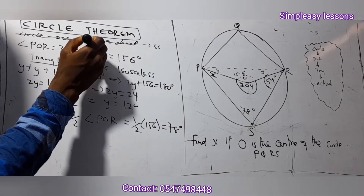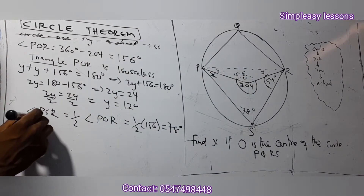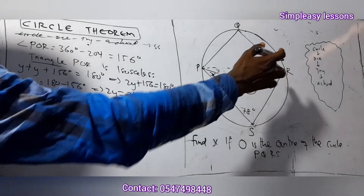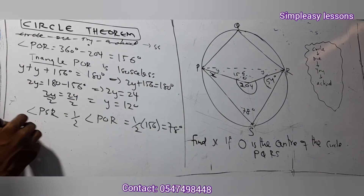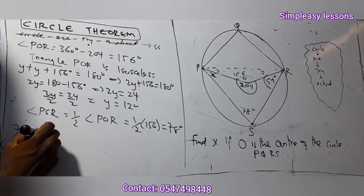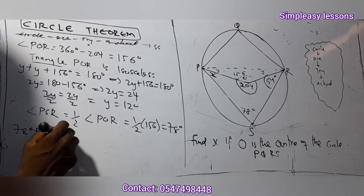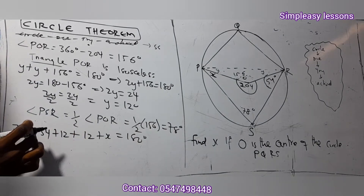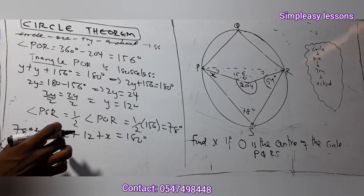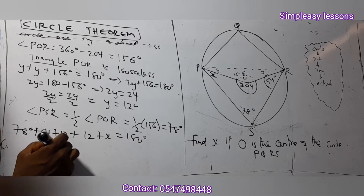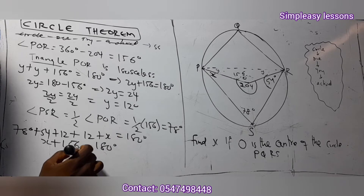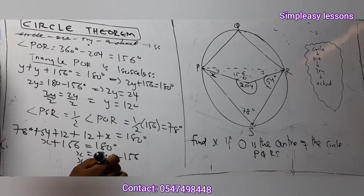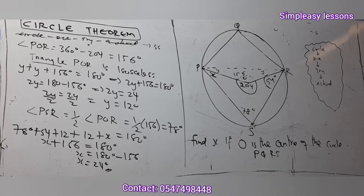Now we tackle triangle PSR. All angles in triangle PSR add up to 180 degrees. We have 78 degrees, plus 54 degrees, plus y which is 12, plus another 12, plus x. Adding 78 plus 54 plus 12 plus 12 gives 156. So x plus 156 equals 180, meaning x equals 180 minus 156, which is 24 degrees.